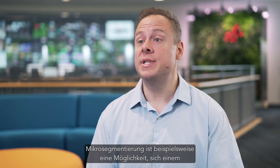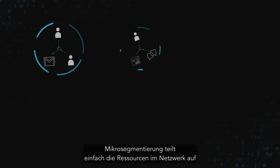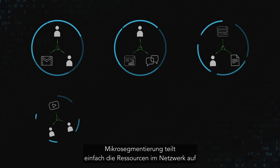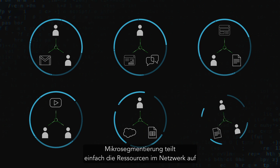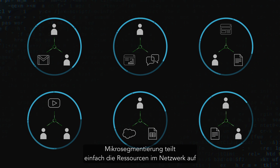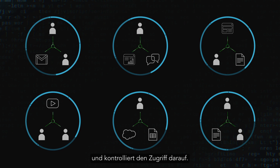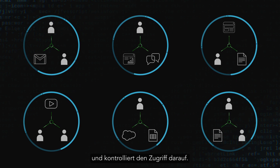You may already be familiar with some forms of zero trust. Micro-segmentation, for example, is one way of getting closer to a zero trust profile. Micro-segmentation is simply dividing assets inside of your network and controlling access between them.